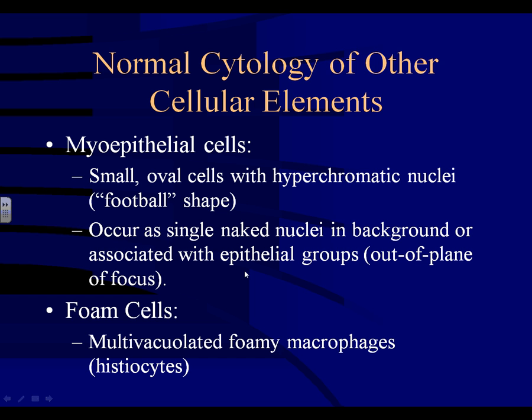Foam cells are basically macrophages that are multivacuolated. In the breast they're called foam cells, but they're simply foamy macrophages. Foam cells are common in normal breasts and especially common in fibrocystic change because you get macrophages whenever you get cysts.